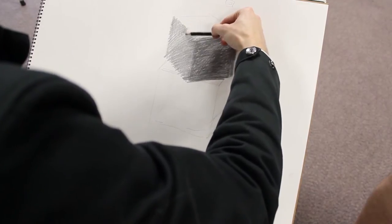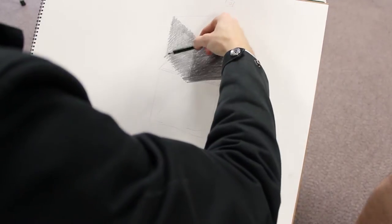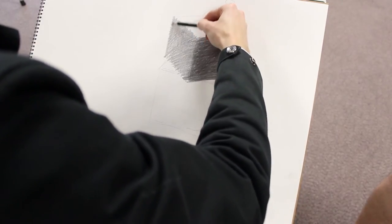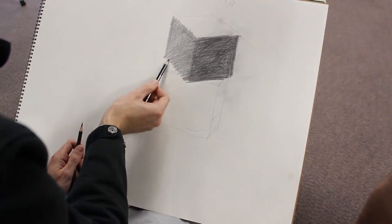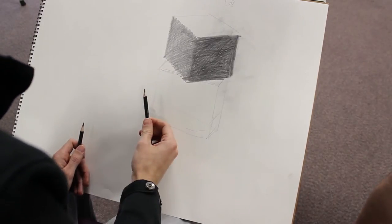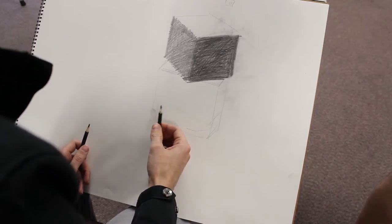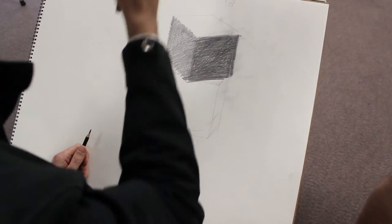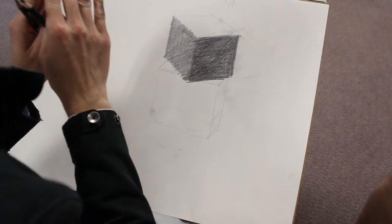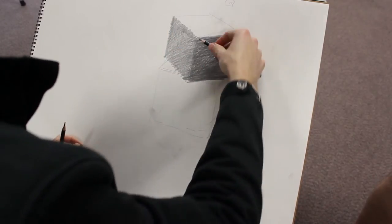So you remember the rule from last time? About plane shifts and value shifts? If there is any plane shift, then there is a value shift. Exactly, yeah. So if there's a plane shift, there's a value shift. If there's a value shift, there's a plane shift. So if you see on your object that you know that there is a change in plane, you know in your drawing that there has to be a change in value.